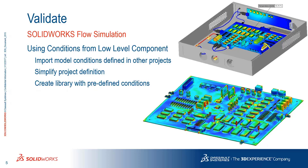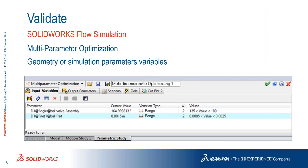The second improvement in flow simulation is multi-parameter optimization. Previously you were only able to work with a single parameter at a time when working toward optimizing your design. But now you can actually use several parameters simultaneously as you look for that optimal value, and it's similar to how design studies work in SolidWorks FEA simulation.